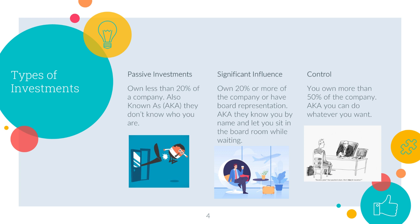The next type of investment is called significant influence, and that's if you own 20% or more of a company, or if you have some board representation, or other factors that give you significant influence. This is like walking into the company and they know your name and let you sit in the boardroom while you wait — you can influence their decisions.